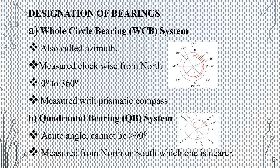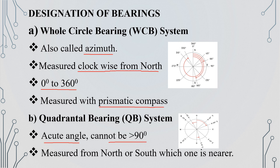Next is the designation of bearings, also called whole circle bearings. Azimuth is a measure of clockwise direction from north, with angles varying from 0° to 360°. This is used in the prismatic compass. The quadrant bearing system divides into 90° acute angles, measured either from north or south, and is used in the surveyor's compass.